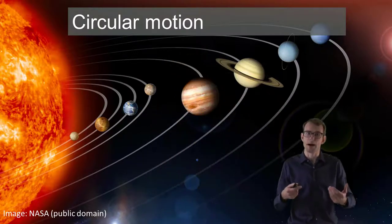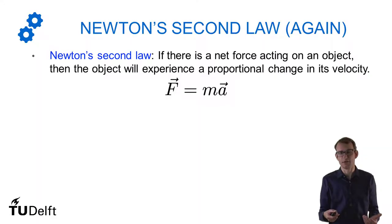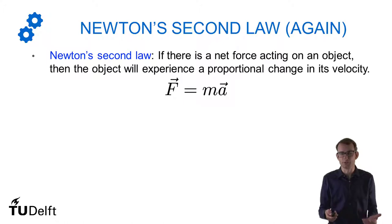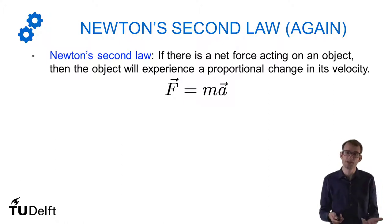For the last unit of mechanics we're going to look at circular motion. So far we've looked mostly at linear motion where everything happens along the same line, and we had one example of parabolic motion when we were firing cannonballs. For this unit we need to go back first to Newton's second law and see what it really says. Newton's second law tells you that if there is a force acting on an object, it's going to cause a change in velocity known as the acceleration.